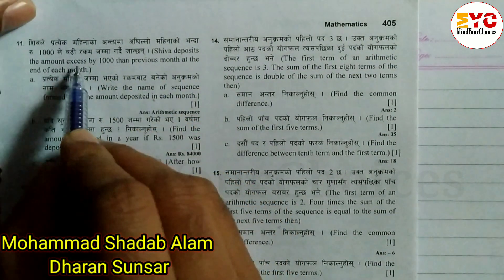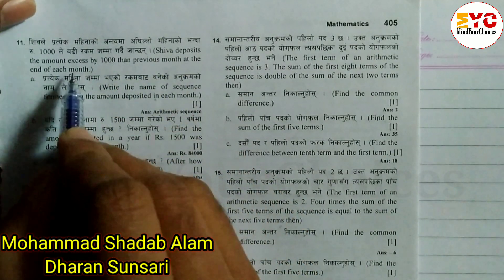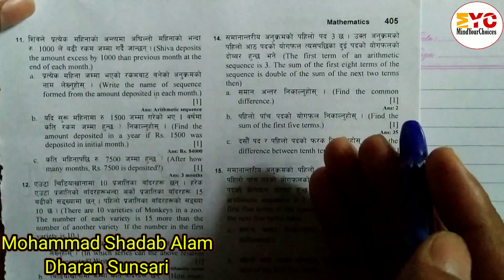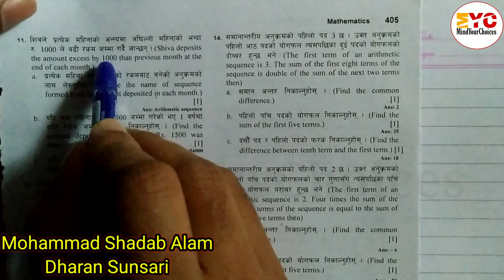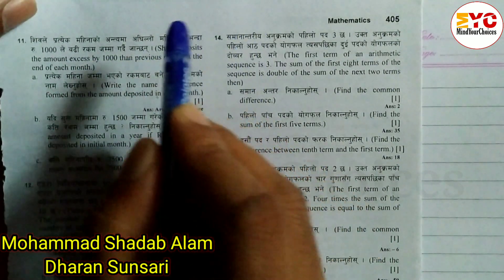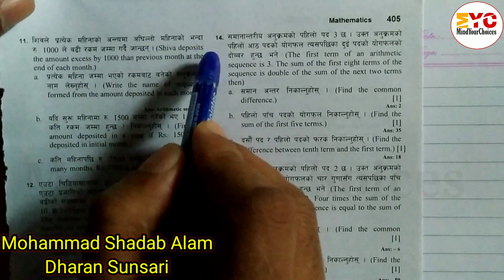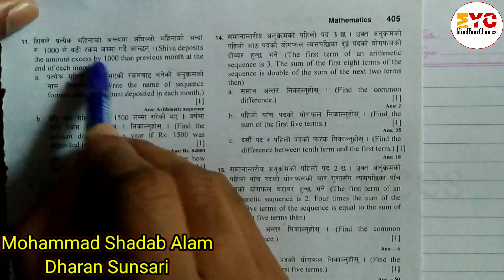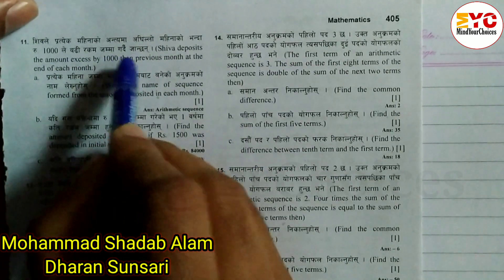Each month, the deposit amount is increased by 1,000 more than the previous month. So the next month's deposit is the previous month's deposit plus the difference of 1,000. For example: 7,000, then 8,000 — every month the deposit increases by 1,000 compared to the previous month.